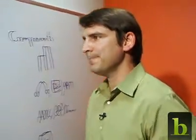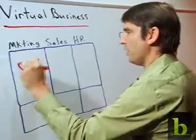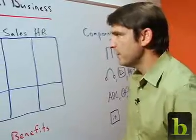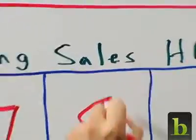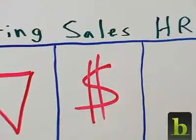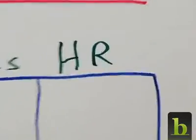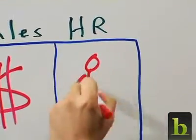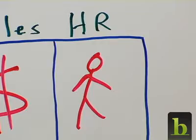So firstly, there's marketing. Marketing's goal is to generate demand or a funnel of leads for the organization. Secondarily, sales — sales is about driving money into the business. And lastly, there's HR. They're focused on bringing highly qualified and talented people into your organization.